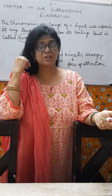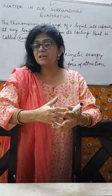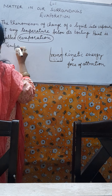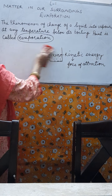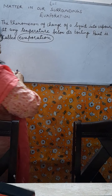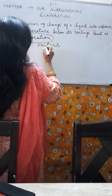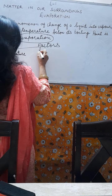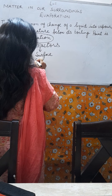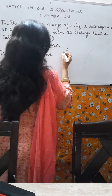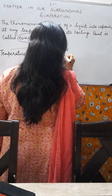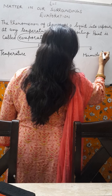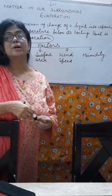Now let us discuss what are the factors affecting evaporation - what does this phenomenon depend on? There are four major factors on which evaporation depends: one is temperature, second is surface area, third is wind speed, and fourth is humidity. We will discuss each one of them one by one.